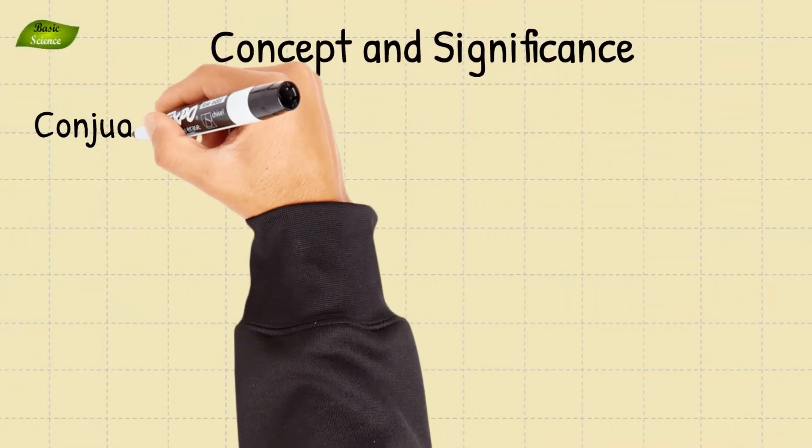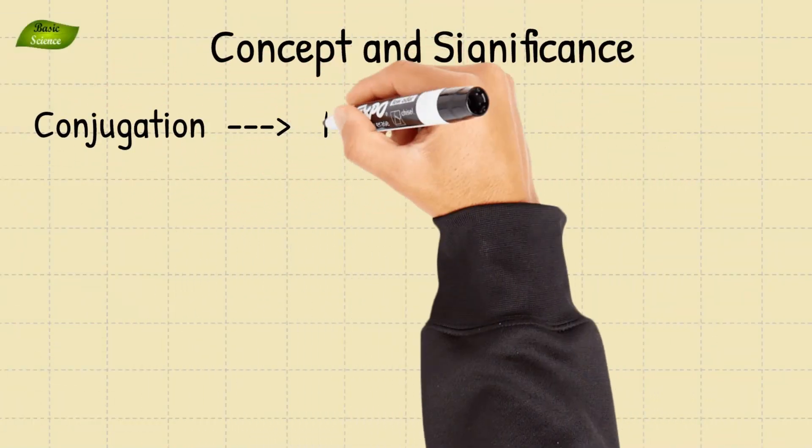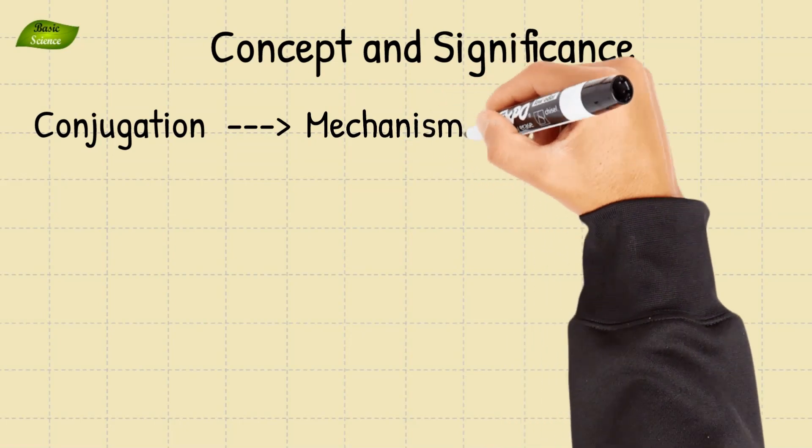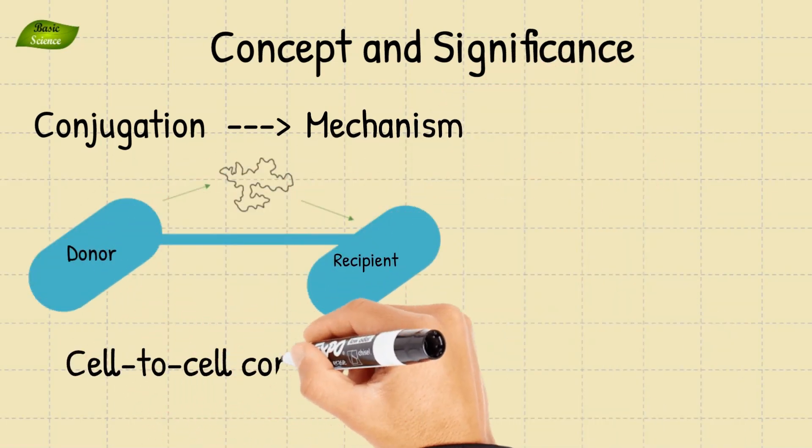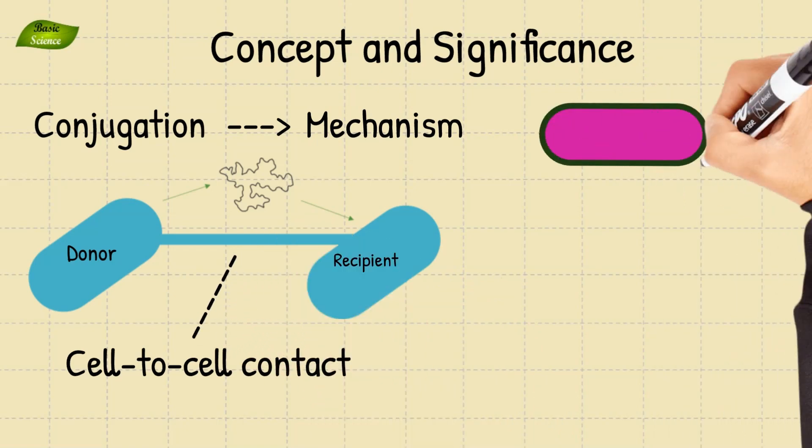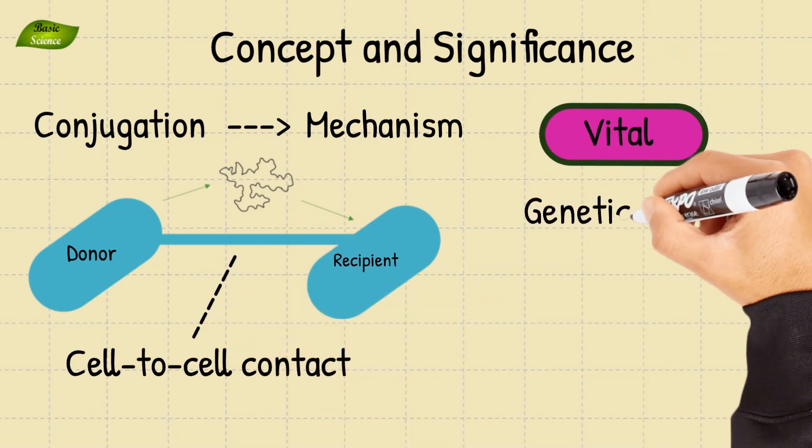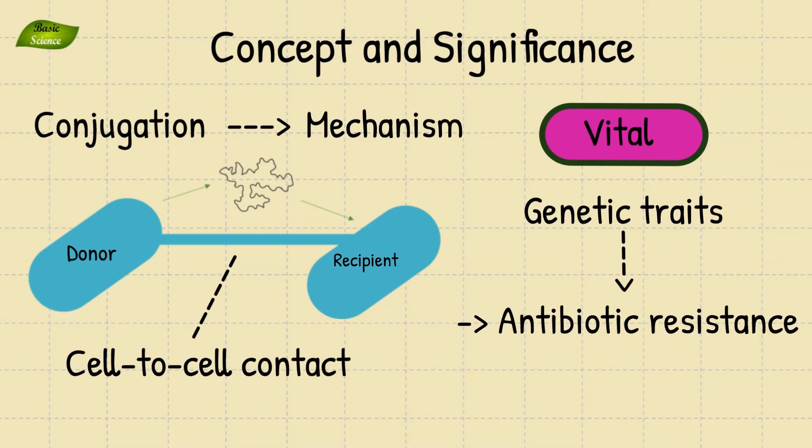Bacterial conjugation is a sophisticated biological mechanism where bacteria exchange genetic material through direct cell-to-cell contact. This process is vital in disseminating genetic traits such as antibiotic resistance across bacterial populations, significantly impacting microbial ecology and pathogenicity.